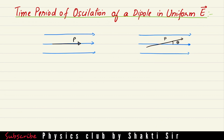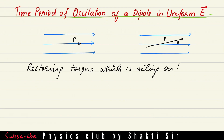Now the torque is acting due to the electric force — a restoring torque which is trying to bring the dipole back to its initial position. The restoring torque acting on the dipole can be written as negative pE sin θ.